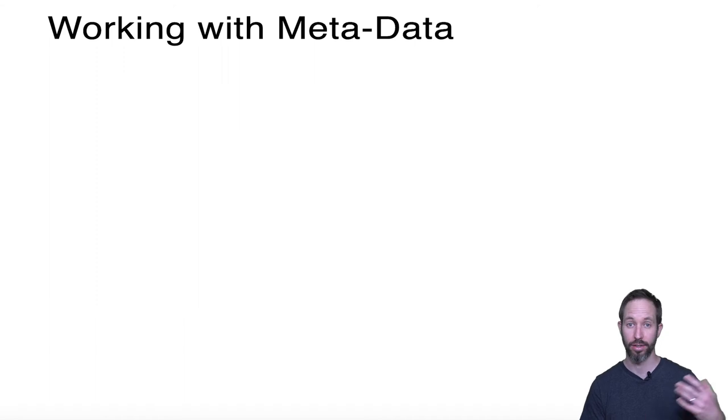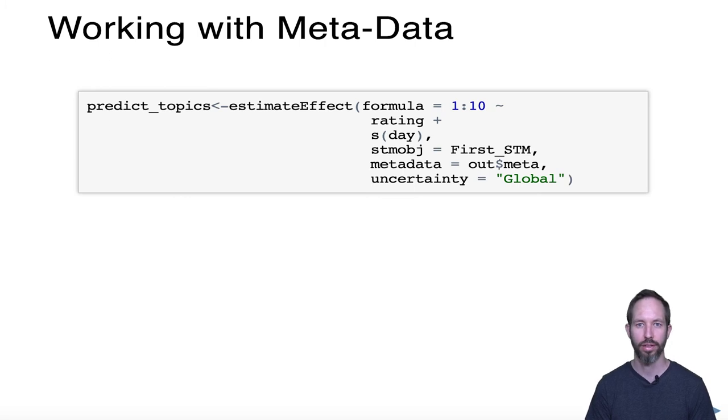The other nice thing about the STM package is you can work with metadata. Once you've used the metadata to predict the topics, you can also then study how the topics are associated with the metadata, which is often what we want to do in the first place with topic modeling. Very often we just want to answer descriptive questions. What were people talking about in 2008? Were liberals talking about different things than conservatives? When did each side start talking about different things? These are the types of things that we can answer really nicely with the STM package.